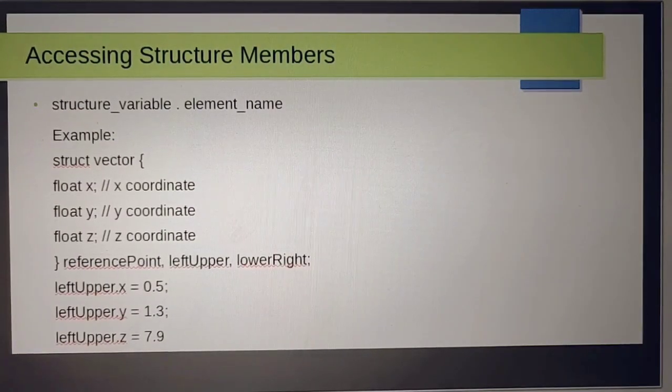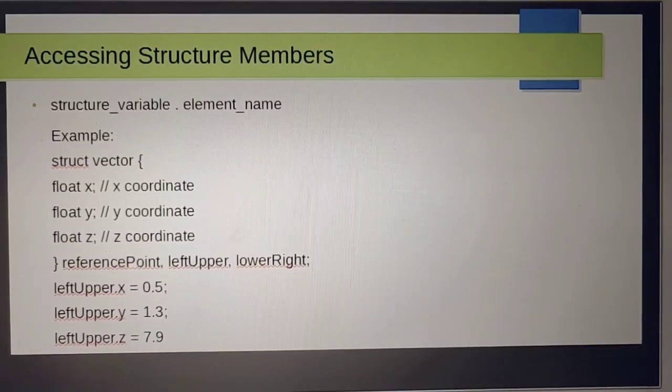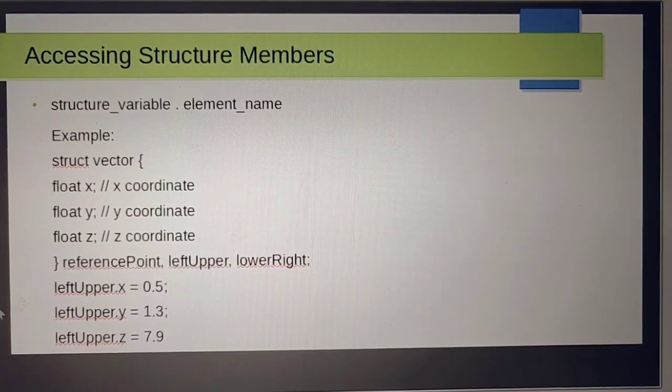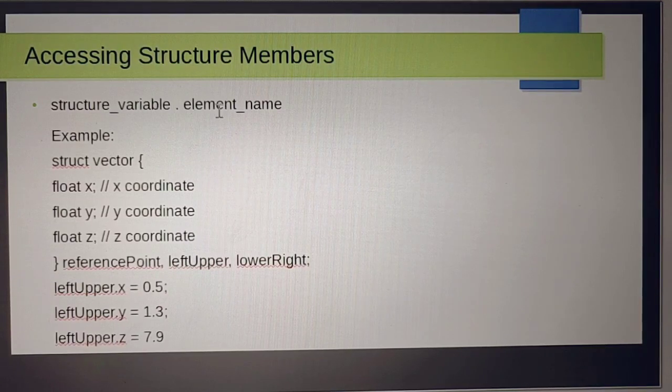By the help of an example, I will now discuss how we can access the elements of structure members and how we can define a structure. For accessing structure members, we have to use a dot operator. We have to first write the structure variable name, then dot operator, then element name.